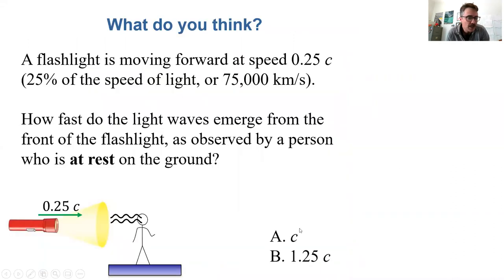So first of all I want to do a quick little question for you about what you think. Here's a flashlight, it's a thought experiment. A flashlight is moving along at 25% the speed of light, 0.25c and it's shining light out in front of it and you observe these light waves from the ground at rest. So how fast do these light waves pass you? Do they pass you at c or do they pass you at 1.25c?